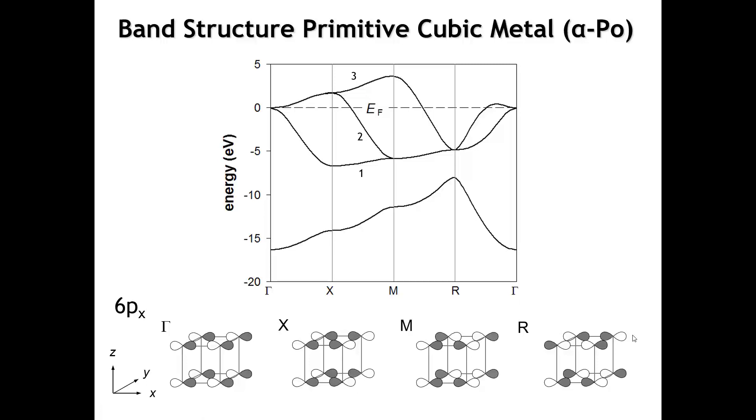Of the three p bands that we see, which one is the 6px band? Is it band one, band two, or band three? The answer is not too hard to discern because when we went to the X point, we went from sigma anti-bonding to sigma bonding, which should have corresponded to a substantial drop in the energy. Only one of the three bands dropped on going from gamma to X, so band number one is our 6px band.